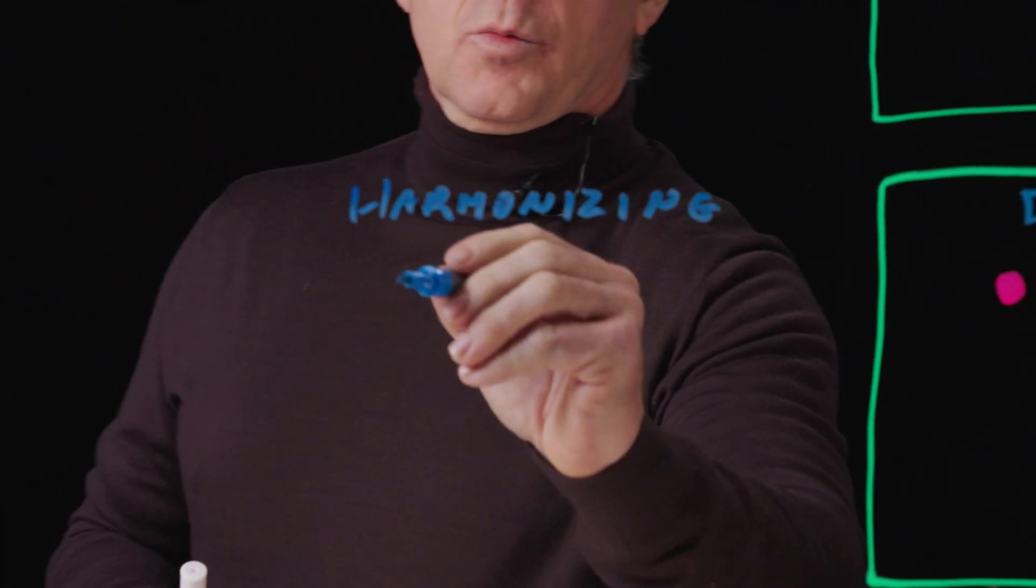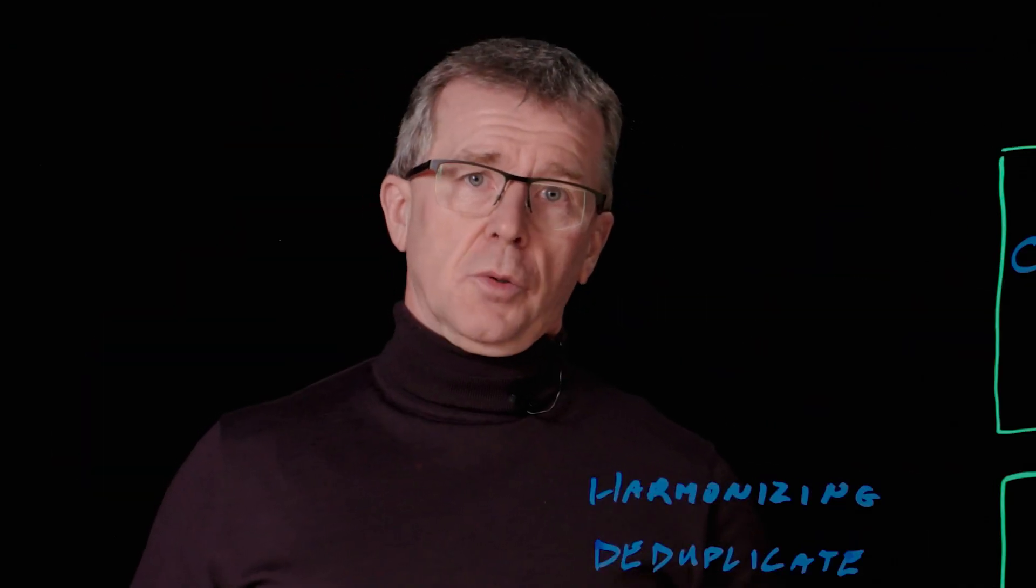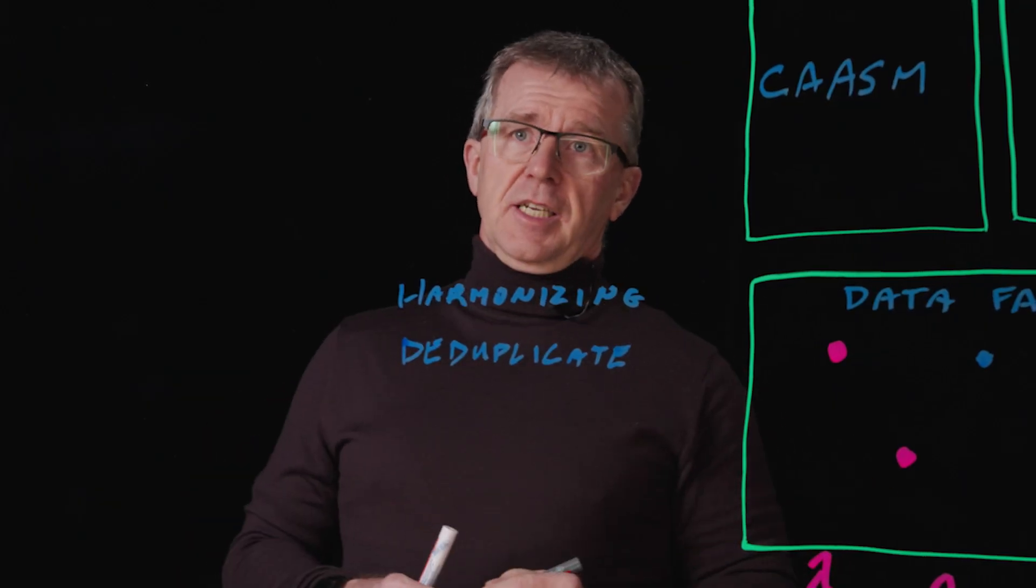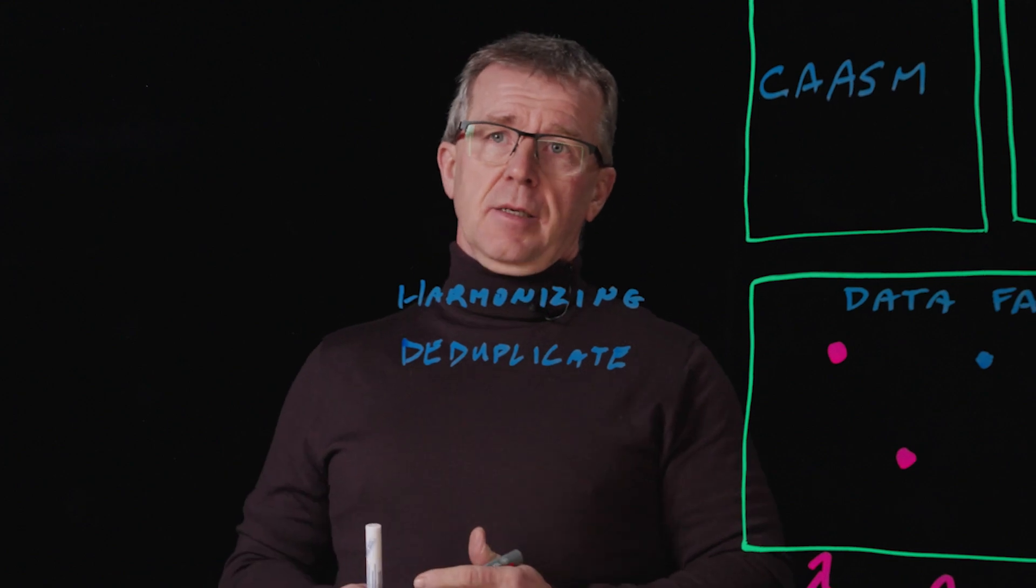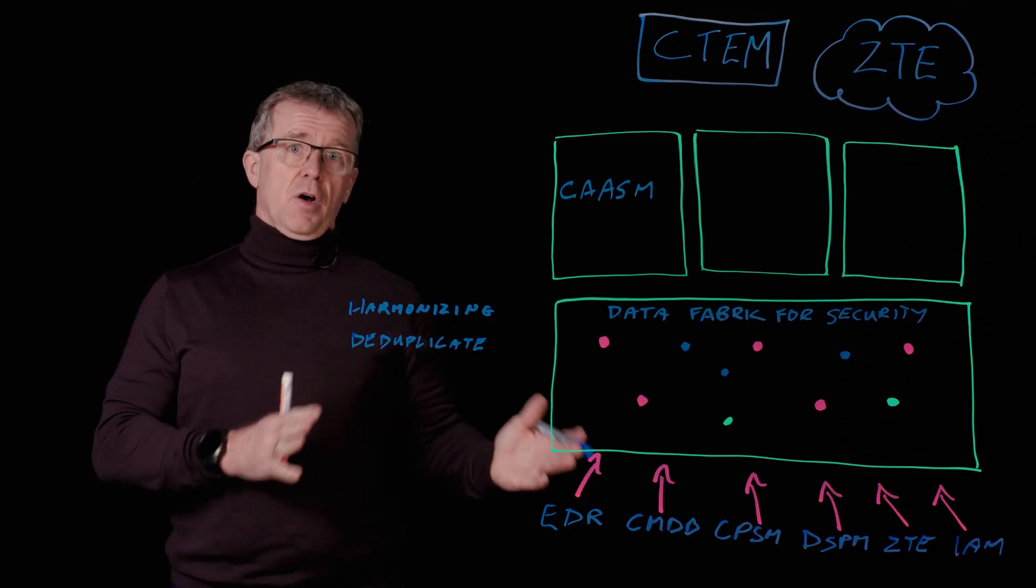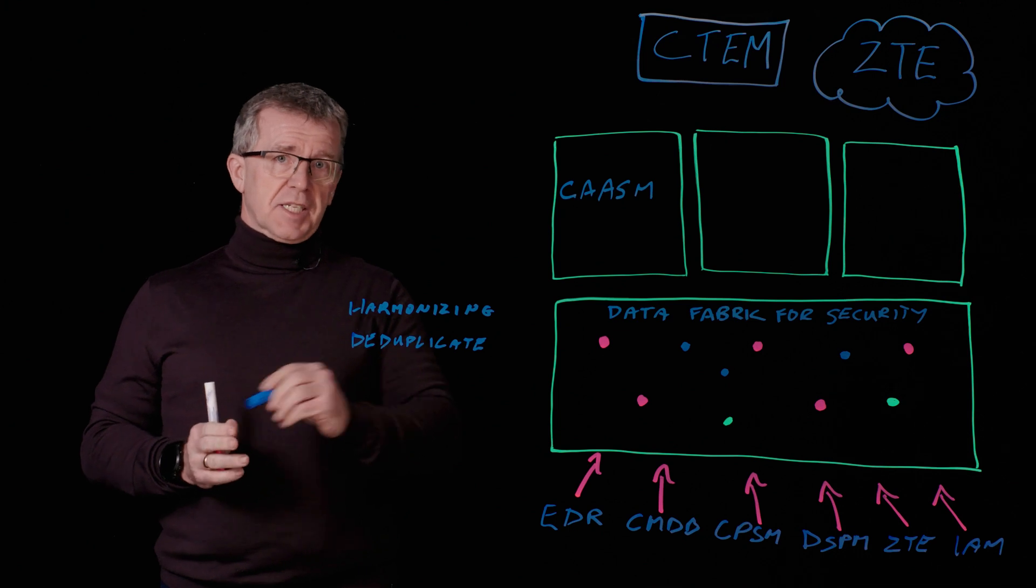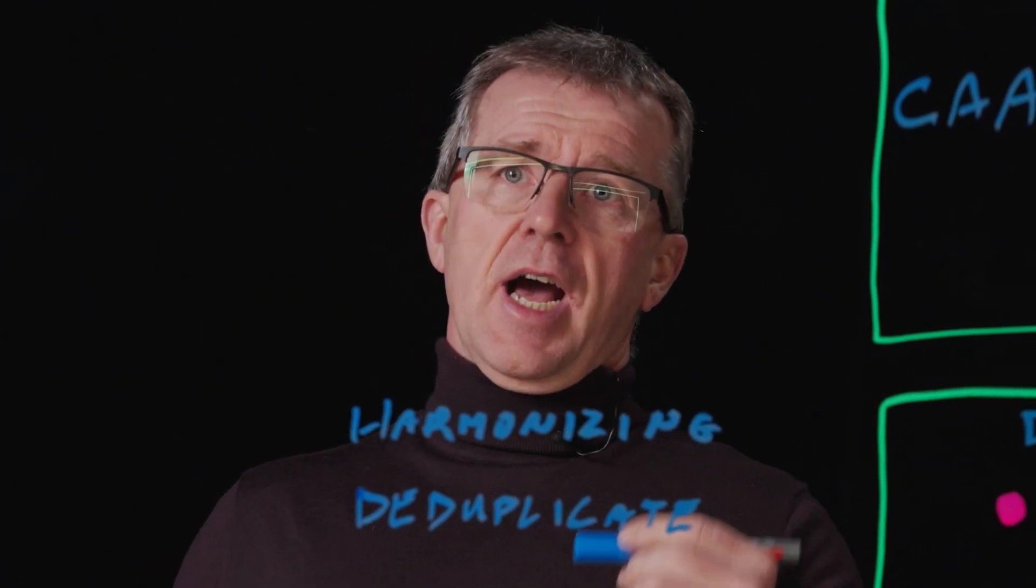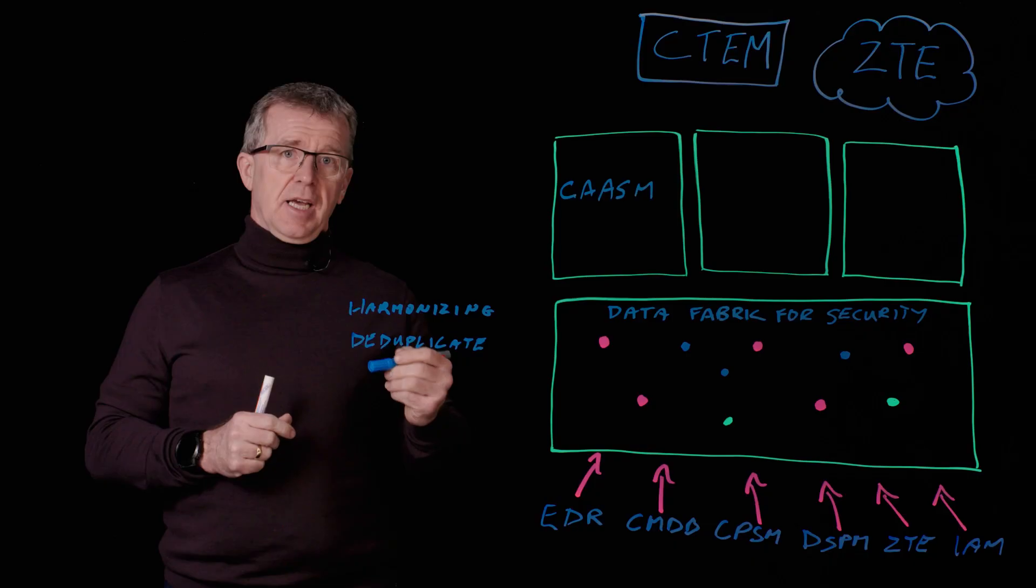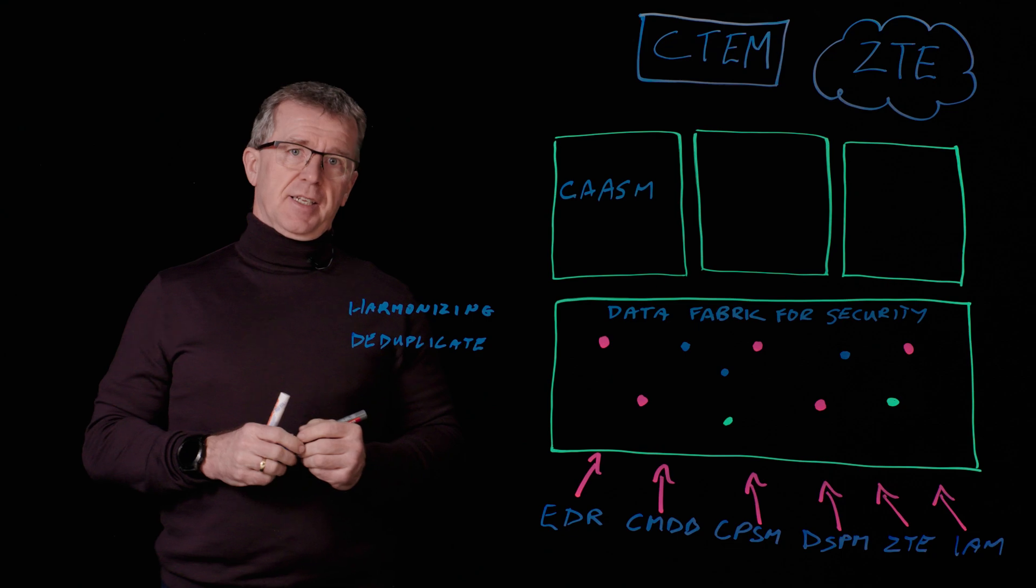Secondly, we deduplicate. No one tool has all of the information about your assets, but we can combine all of the data across all of the tools to get a superset. But we also see lots of overlap. We need to ensure that we're reporting the same asset once, not multiple times because multiple tools have seen that data.